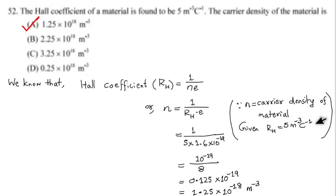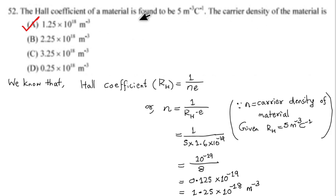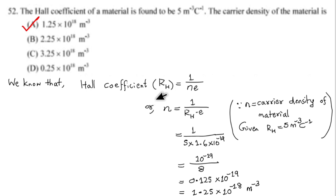Question number 52: The Hall coefficient of a material is found to be 5 meter cube per coulomb. The carrier density of the material is to be found. This is from the solid state physics chapter. The Hall coefficient expression is: R_S is equal to 1 divided by N times E.